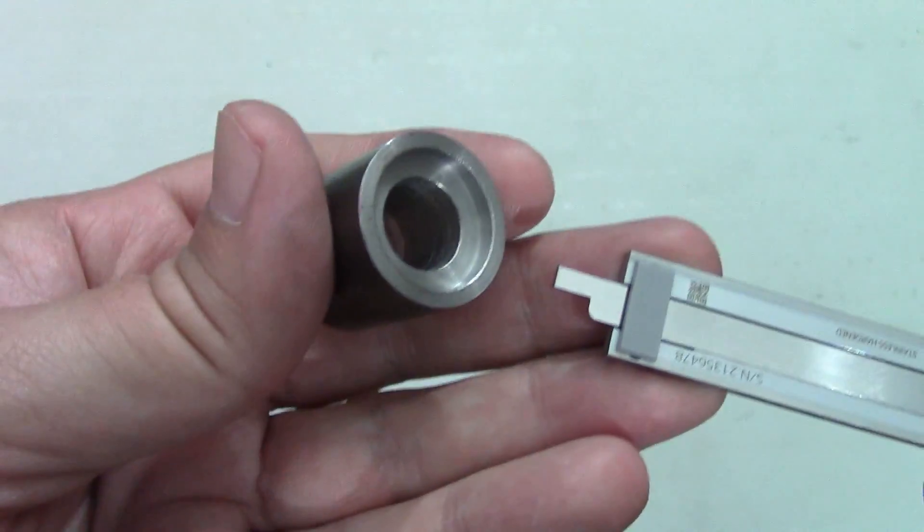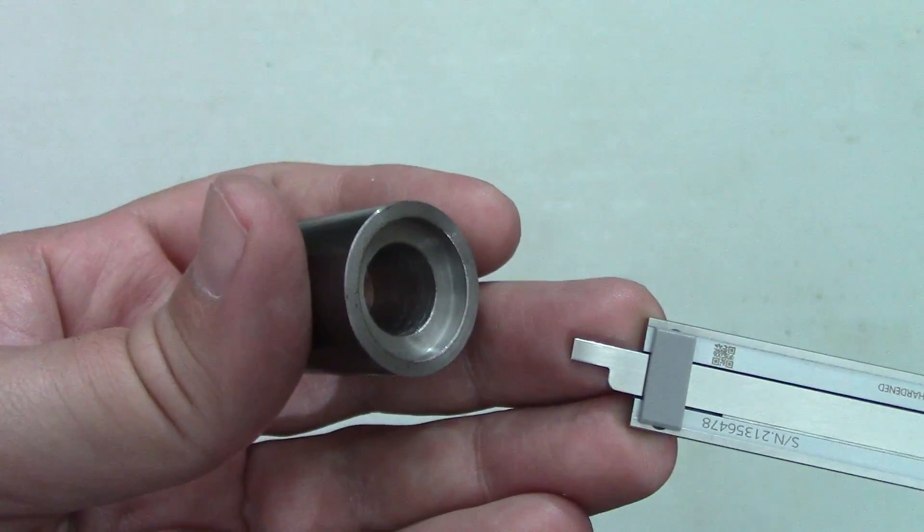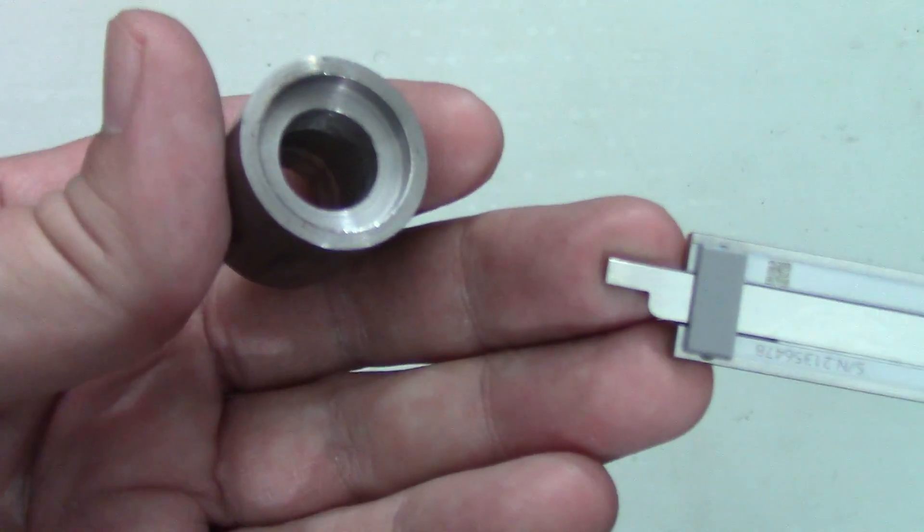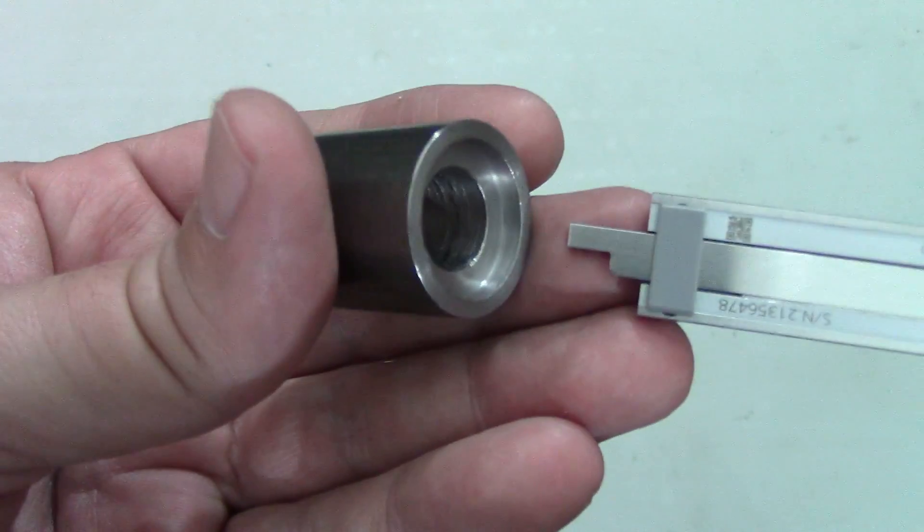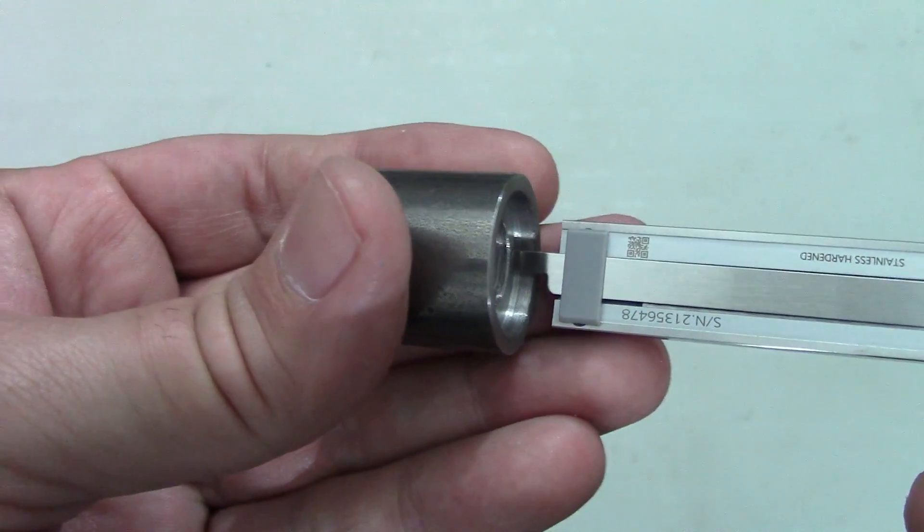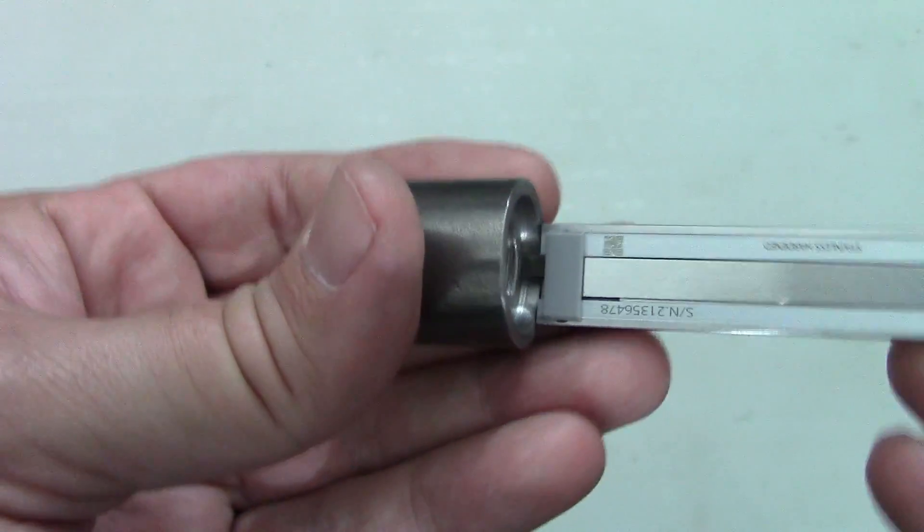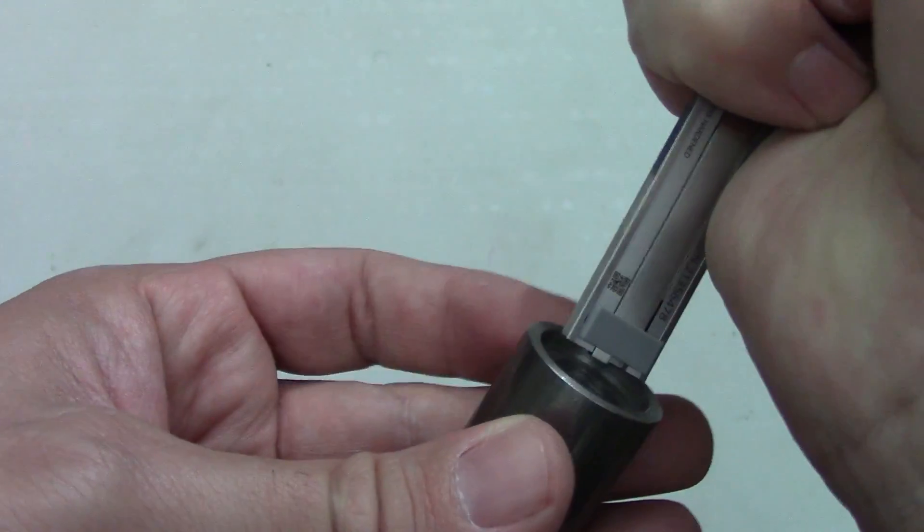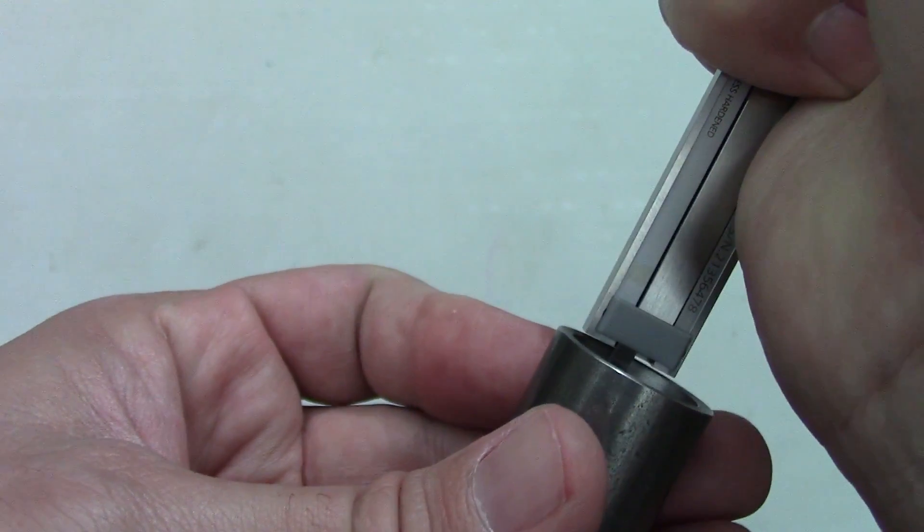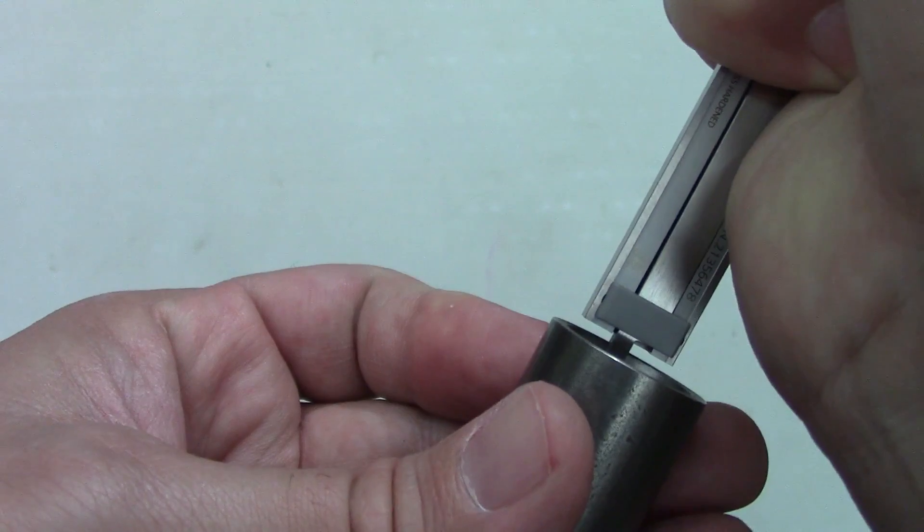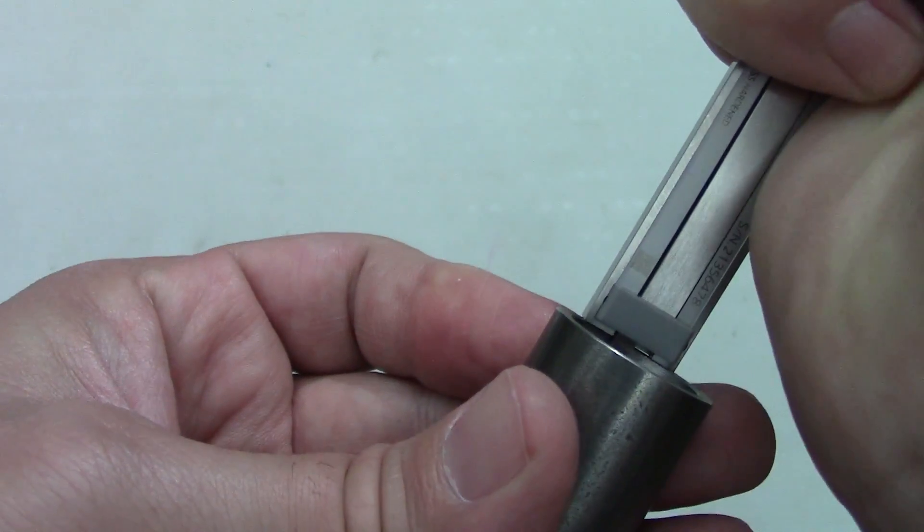Measuring with the depth rod takes a certain finesse as I mentioned before. I find I get the best results by extending the depth rod out farther than I need it, and then bringing the rest of the calipers to the part. Trying to do it the other way around tends to lift the calipers up off the part like a jack, and it's difficult to get consistent readings.